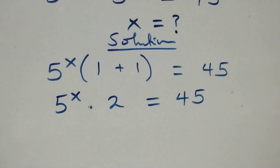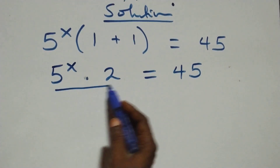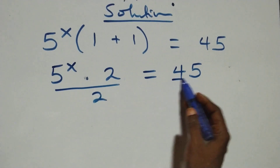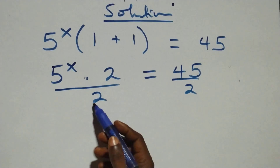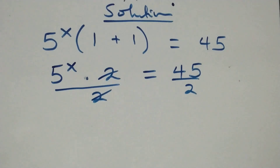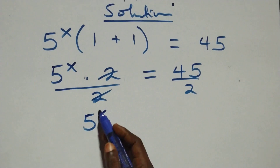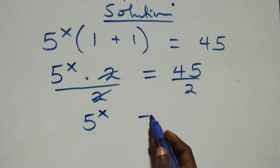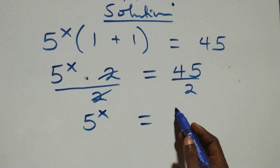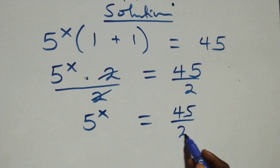The next step here, we divide this side by 2, and also divide this side by 2. The 2s cancel each other, and we have 5 raised to power x left, which equals 45 over 2 here.